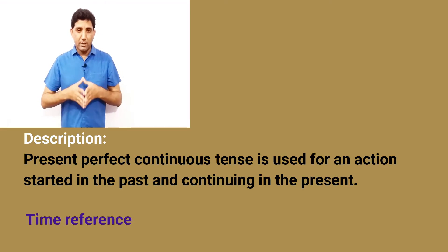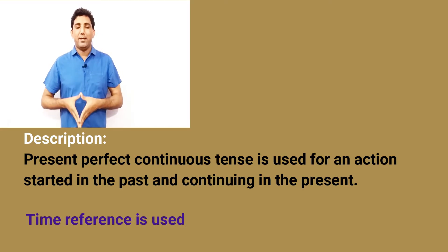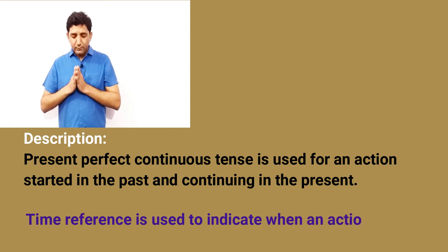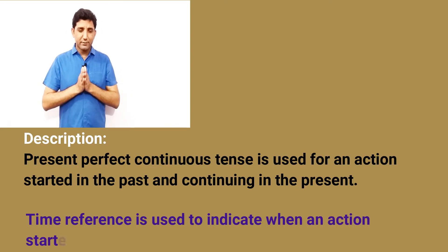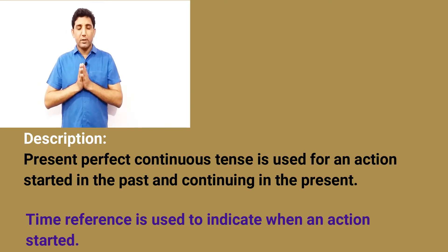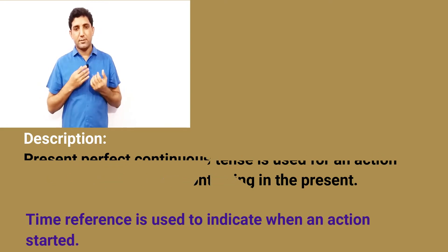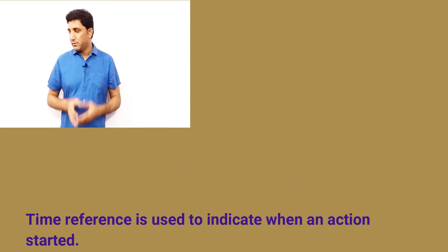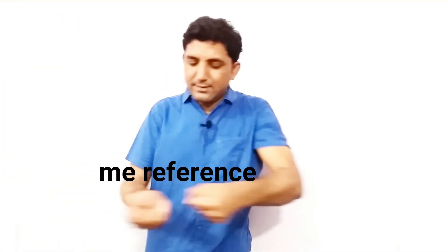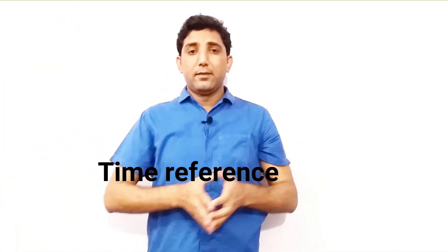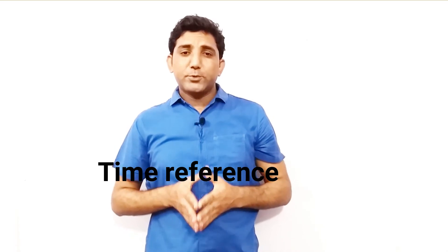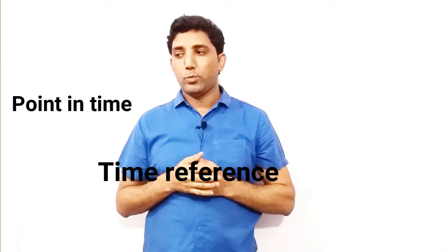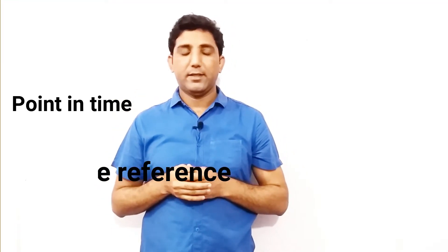Let's break it down. Present perfect progressive tense is used for an action that started in the past and continuing in the present. Time reference is used to indicate when an action is started.